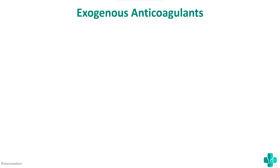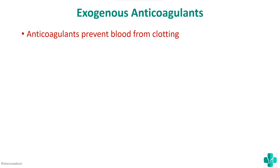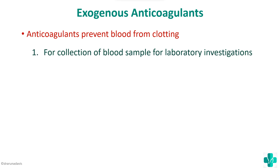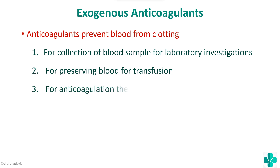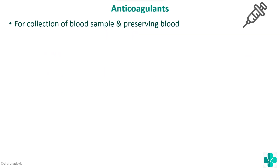Exogenous anticoagulants basically prevent blood from clotting and are usually used for collection of blood samples for laboratory investigations, for preserving blood for transfusion, as well as for anticoagulation therapy. We will now see some important anticoagulants used for both collection of blood samples and for preserving blood for blood transfusion.